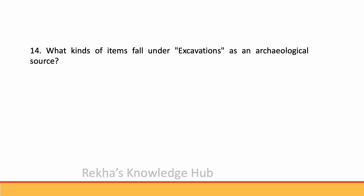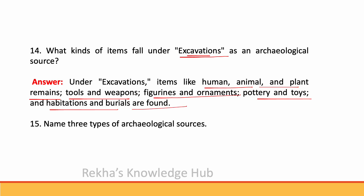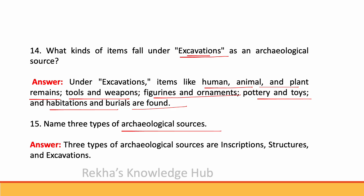What kinds of items fall under excavations as an archaeological source? Under excavations, items like human, animal and plant remains, tools and weapons, figurines and ornaments, pottery and toys, and habitations and burials are found. Three types of archaeological sources are inscriptions, structures and excavations.